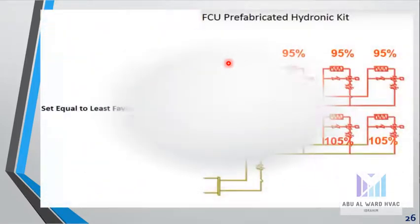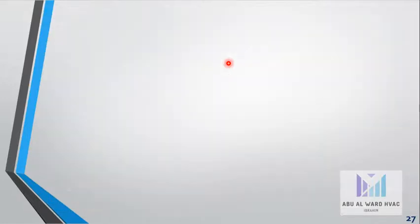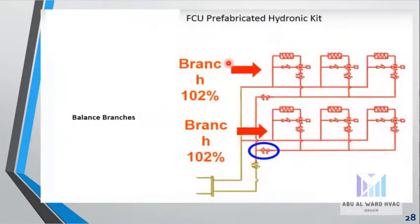We will go to the next unit and do the same, then the last one. Finally, we will set up the main valve of this circuit so we can get both circuits balanced together at the same value and return to the design values.